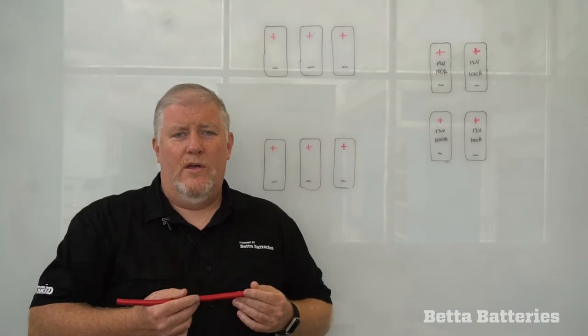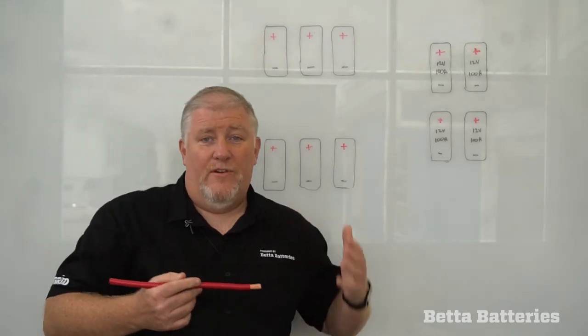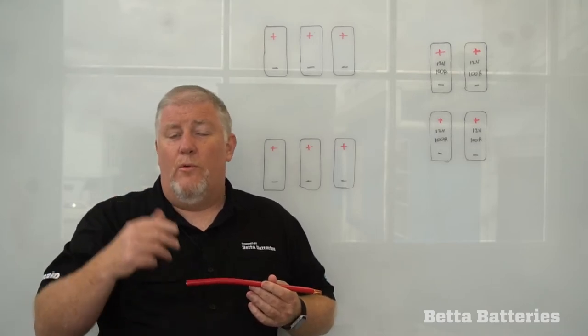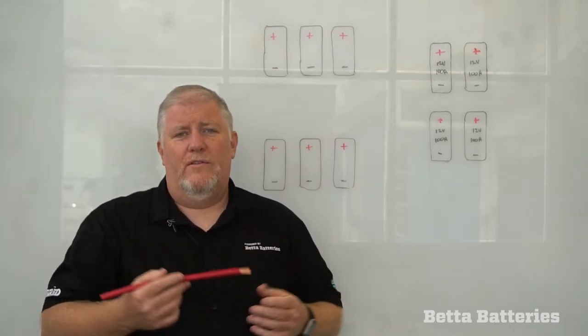The other thing that determines the thickness of the cable is the length of the cable run. So if I'm trying to get from the front of a four-wheel drive to the back of a four-wheel drive you can often get a volt drop or more across the length of the vehicle. So increasing the cable size will help reduce that voltage drop.